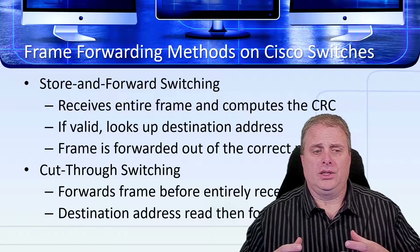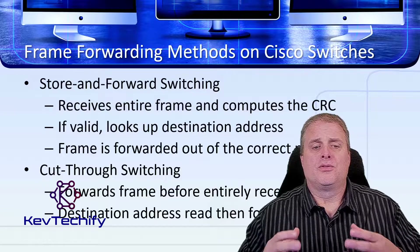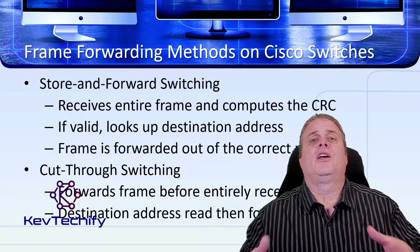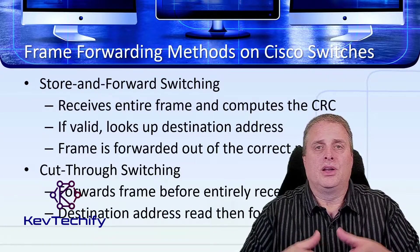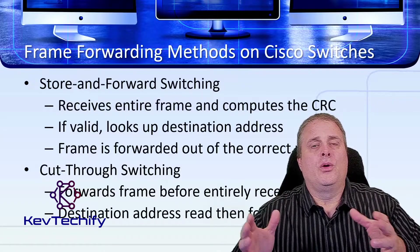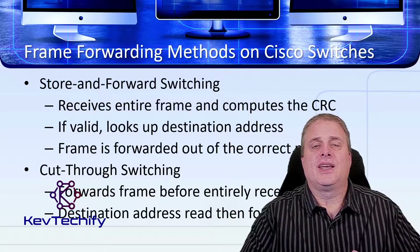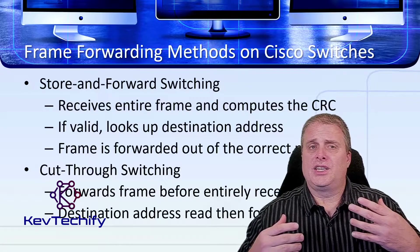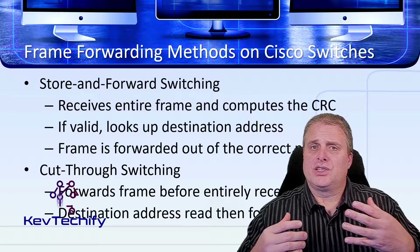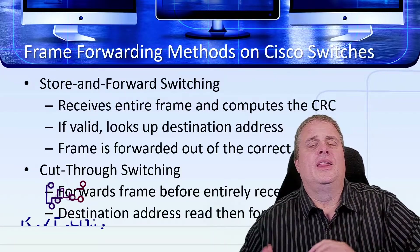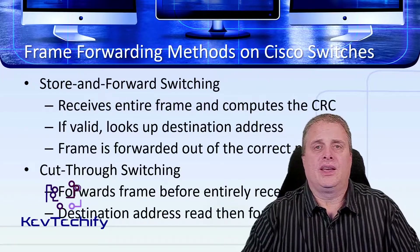Cut-through switching forwards the frame before the entire frame is loaded. You just get a small part in and we start sending it out right away. The destination address is read once we get a little bit in, and then we start sending it out.